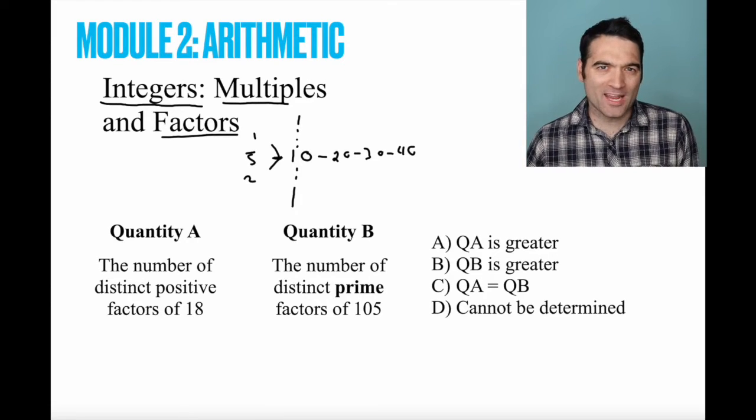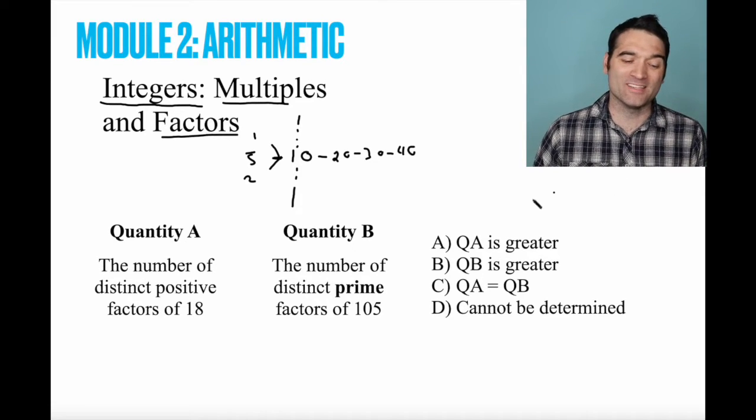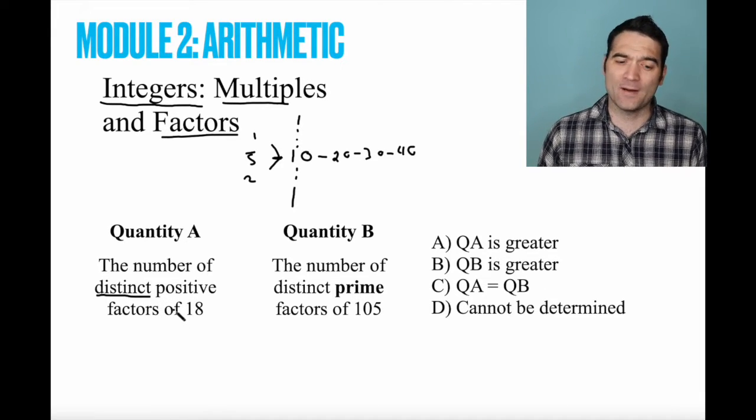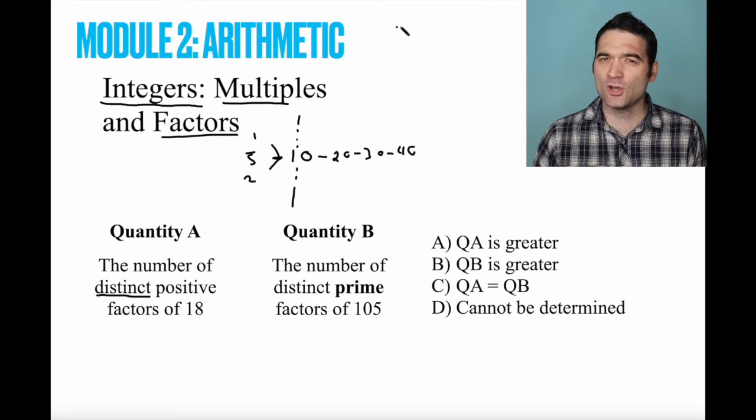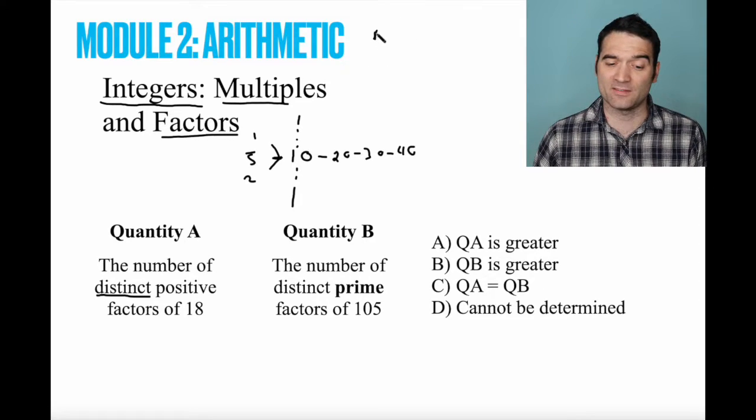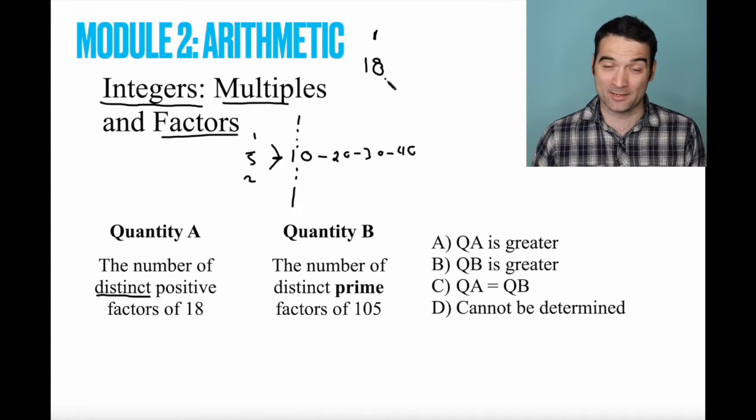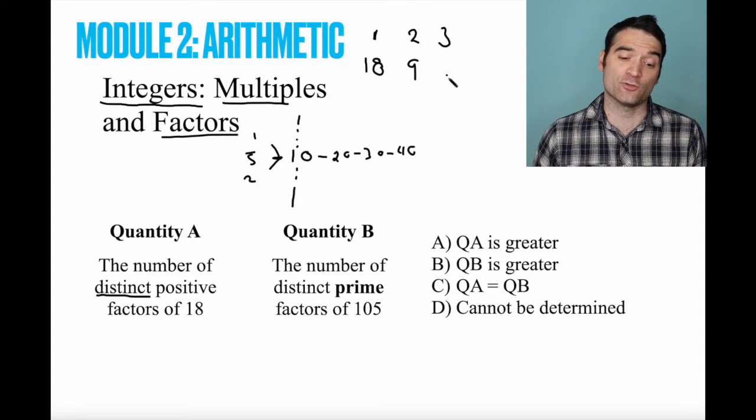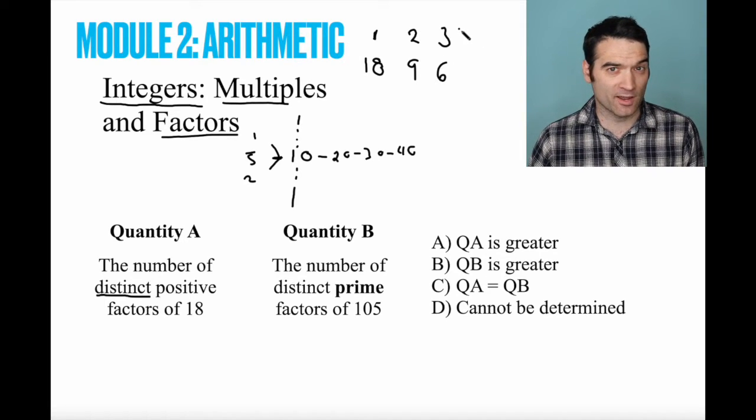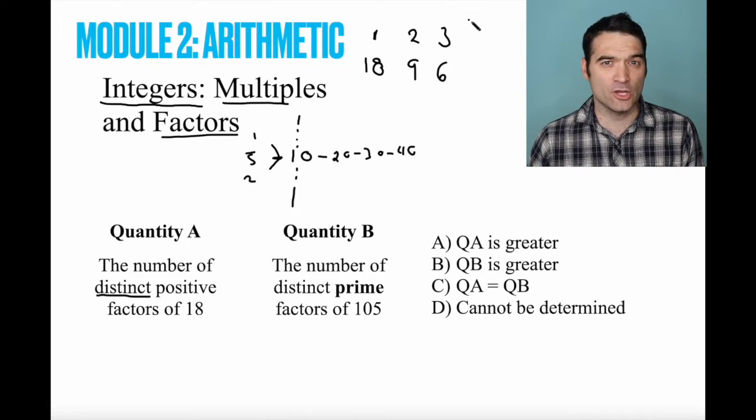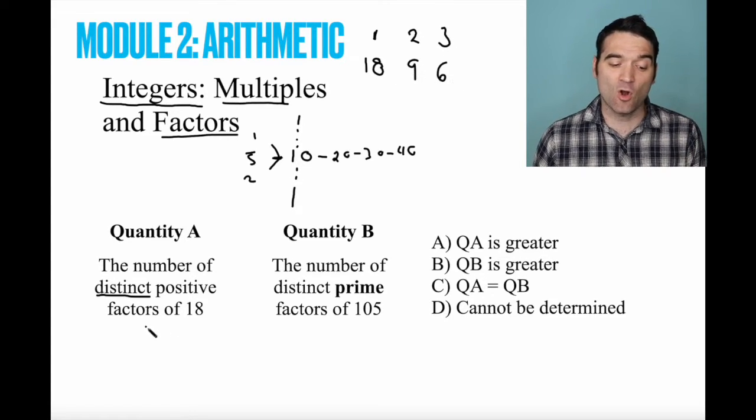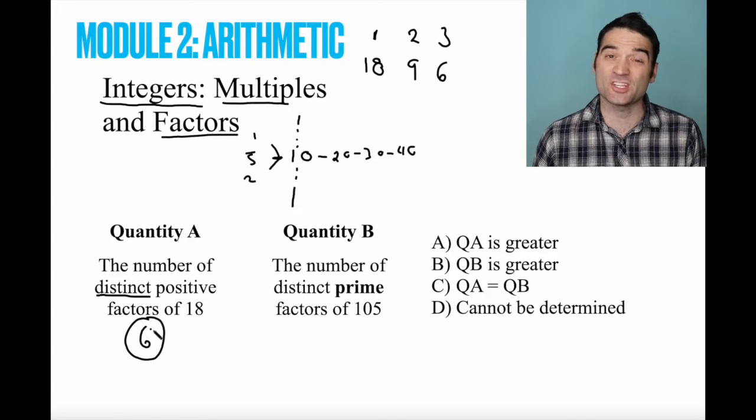All right, let's get to it. Quantity A wants us to find the number of distinct, that means different, positive factors of 18. So what are the positive factors of 18? Well, let's go from least to greatest. One is a factor of 18, and that is a factor of 18 with 18, right? So one and 18 are both factors of 18. Two is a factor of 18 with nine. Three is a factor of 18 with six. Is four, check your calculator, no. Five, no. Six, well, we already got it, right? So if I count these up, one, two, three, four, five, six, these are all factors of 18. So there are six factors of 18.